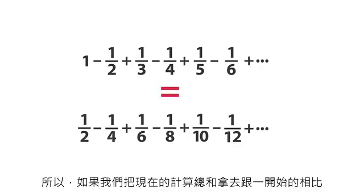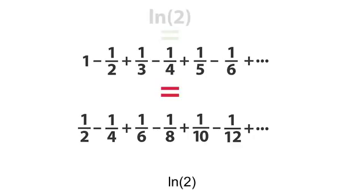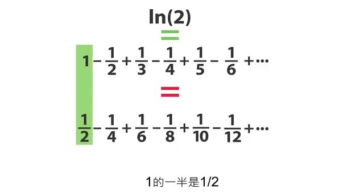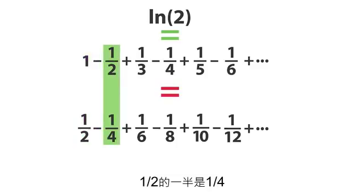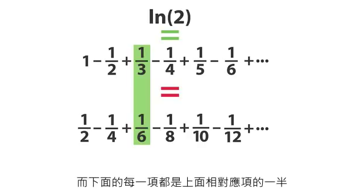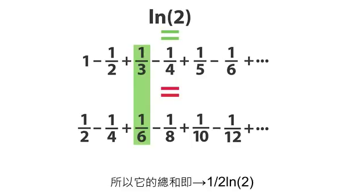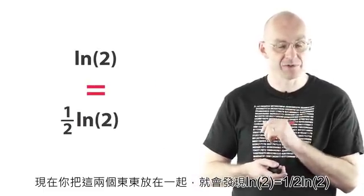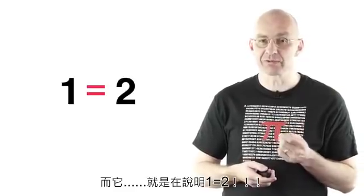If you compare what we've got now to what we started with, well the bit that we started with is log 2. But now we can compare term by term. 1/2 of 1 is 1/2, 1/2 of 1/2 is 1/4, 1/2 of 1/3 is 1/6, and so on. And so what you see is that term by term the bit at the bottom here is always 1/2 of the bit at the top. So what that means is it should really be equal to 1/2 log 2. Now if you put all this stuff together you get log 2 is equal to 1/2 log 2, which really amounts to the same thing as saying that 1 is equal to 2.